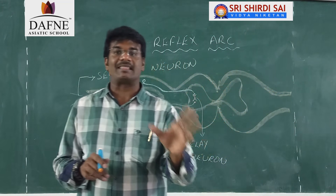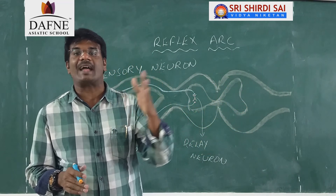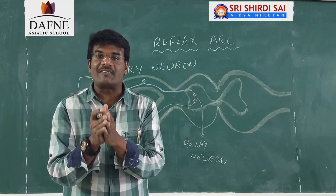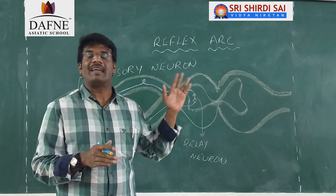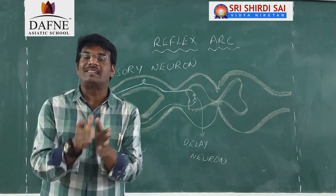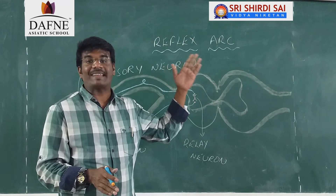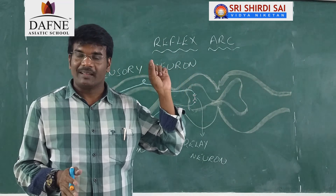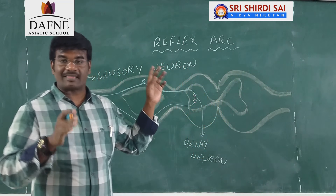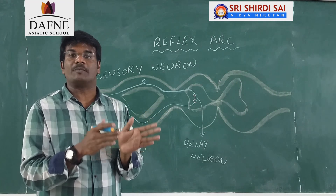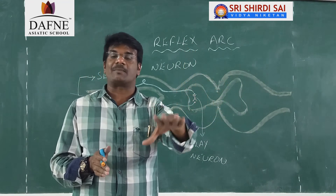The reflex arc is the junction formed by the association of the respective nerves and the muscle cells. Those particular reflex arcs are numerously present in the spinal cord. Reflex arcs take the responsibility of showing the response by the organism, and those reflex arcs are located in the spinal cord.